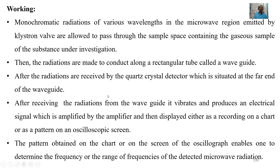Now let us concentrate on the working. Monochromatic radiations of various wavelengths in the microwave region emitted by the klystron tube are allowed to pass through the sample space containing the gaseous sample of the substance under investigation. The radiations are then conducted along a rectangular tube called a waveguide, after which they are received by the quartz crystal detector situated at the far end of the waveguide. Upon receiving the radiations, it vibrates and produces an electrical signal which is amplified and displayed either as a recording on a chart or as a pattern on an oscilloscope screen.